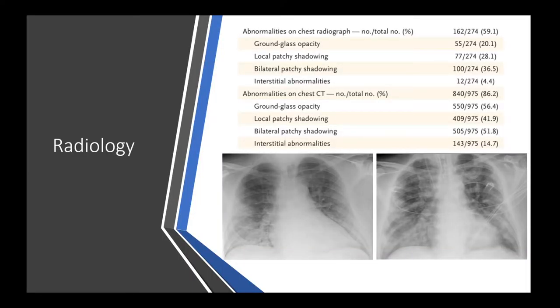In terms of radiology findings, the most common imaging is chest X-ray, plus or minus CT scan. In our hospital, CT scan is not commonly done — it's usually reserved for patients going to ITU or to exclude other diagnoses like PE, where a CTPA is needed. The most common chest X-ray findings in COVID are ground-glass opacity, local patchy shadowing, bilateral patchy shadowing, and less commonly, interstitial abnormalities.